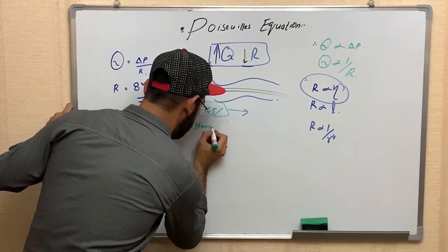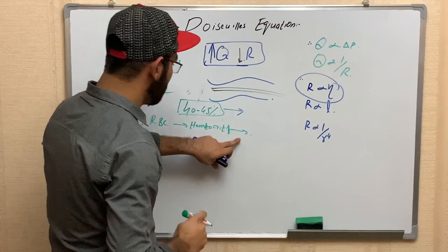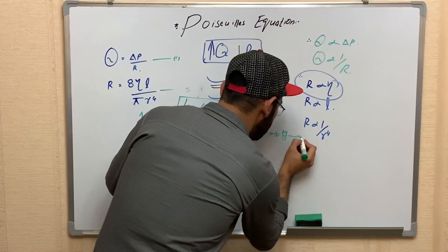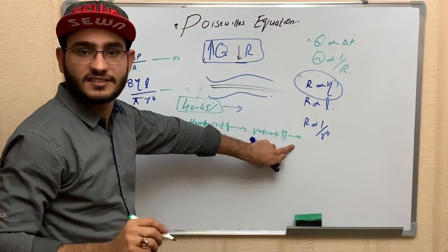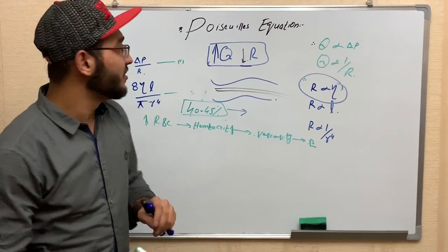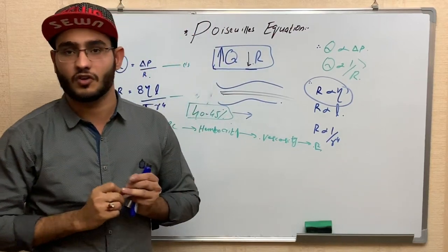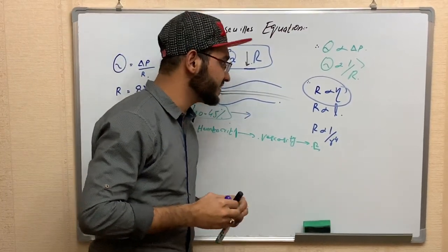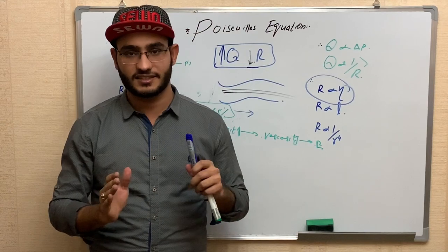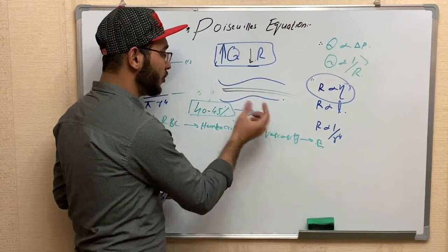To summarize the chain: when red blood cell count is high, hematocrit is high; when hematocrit is high, viscosity is high; when viscosity is high, resistance is high. Since resistance is inversely proportional to blood flow, when resistance increases, the flow of blood decreases.